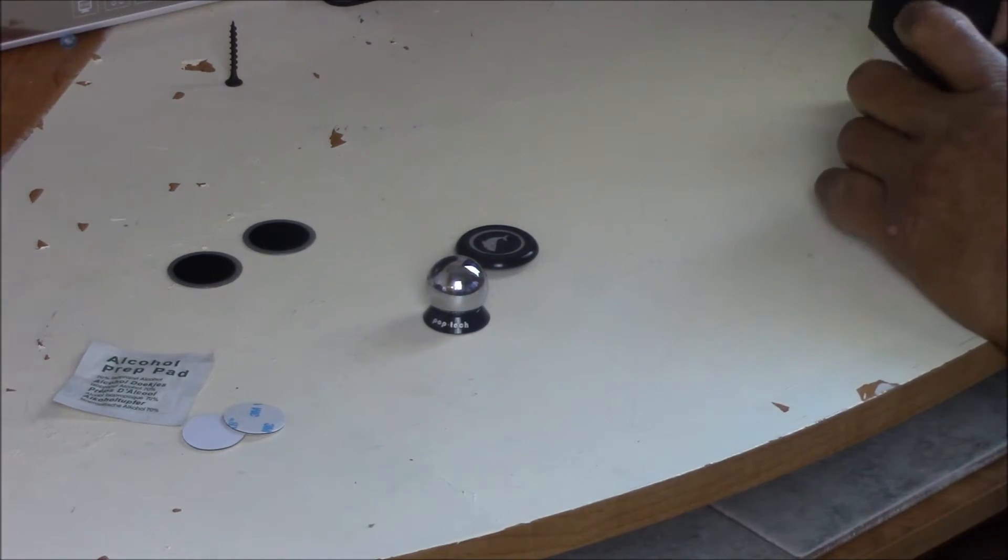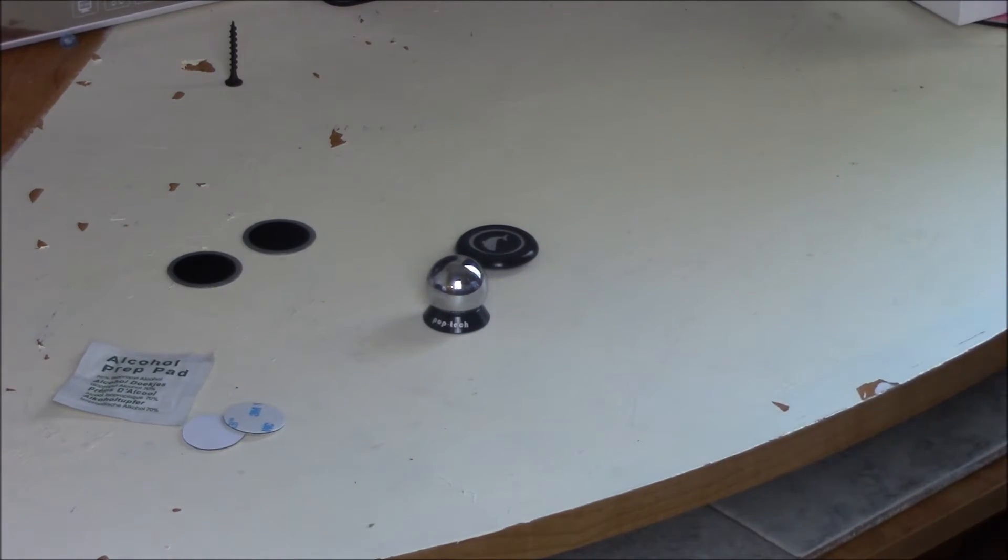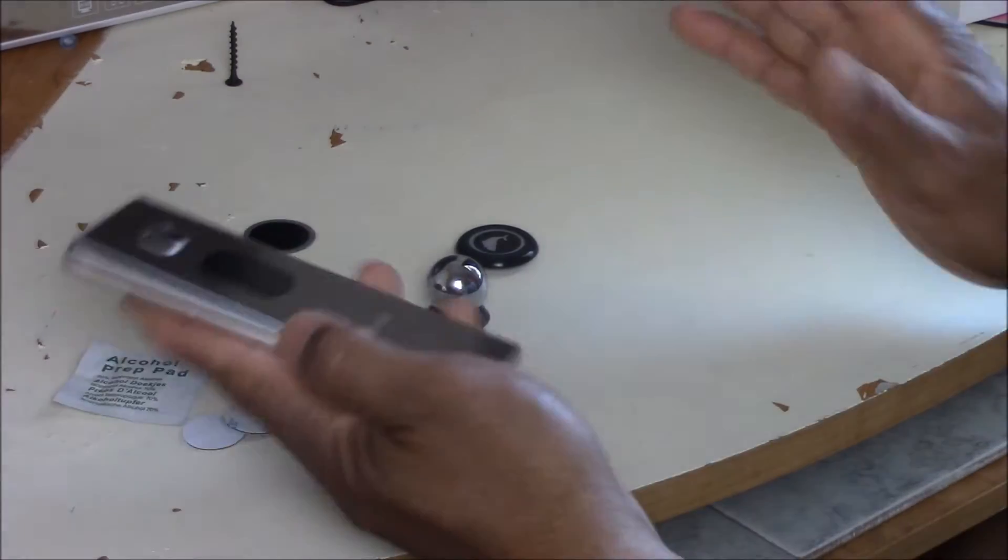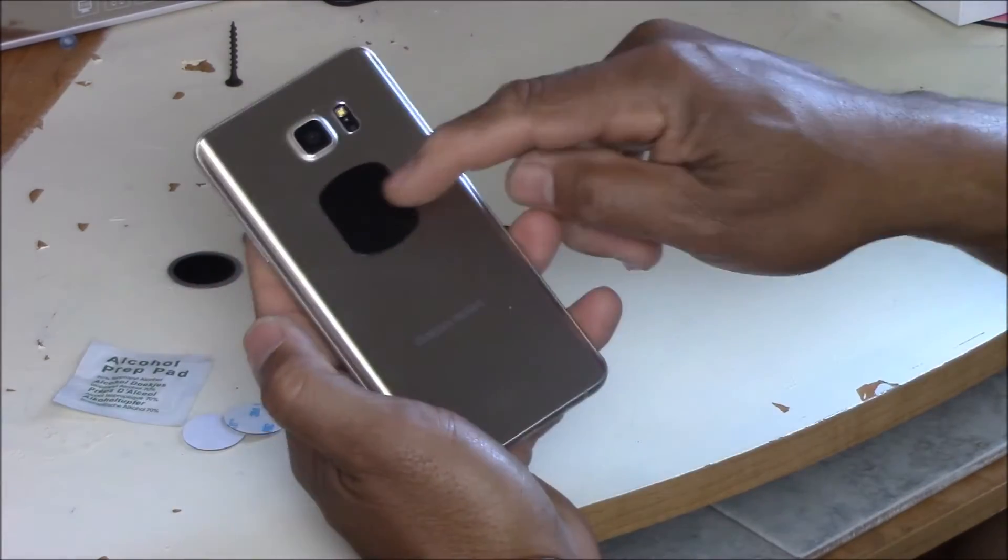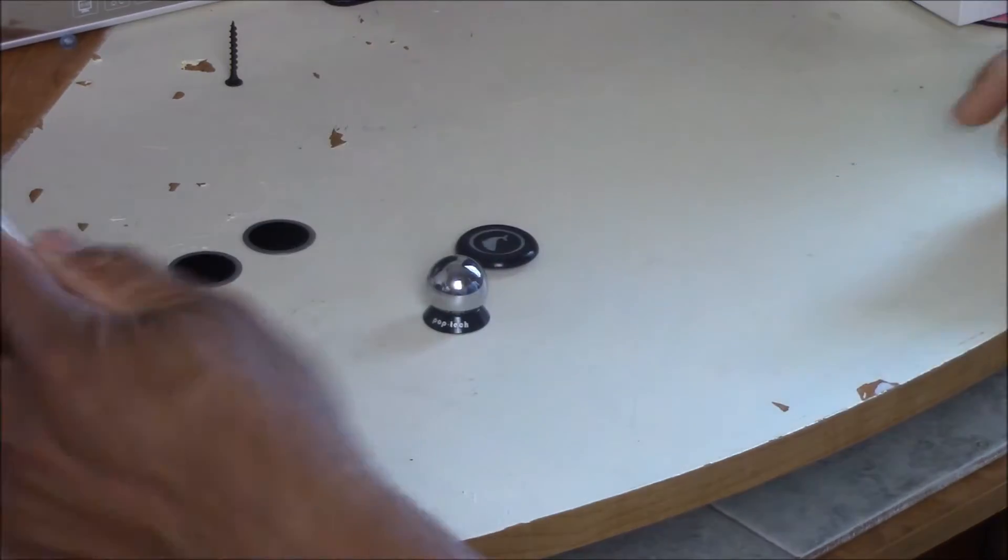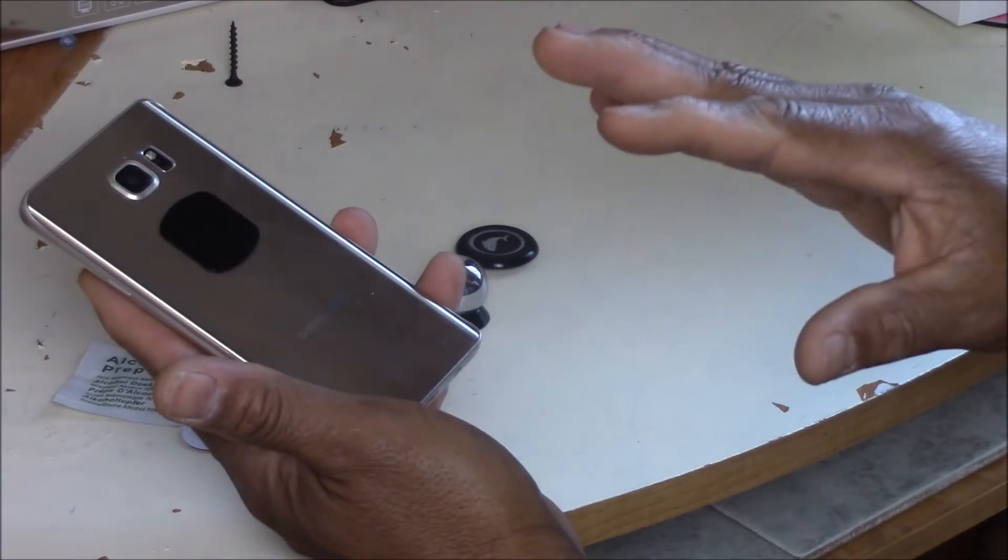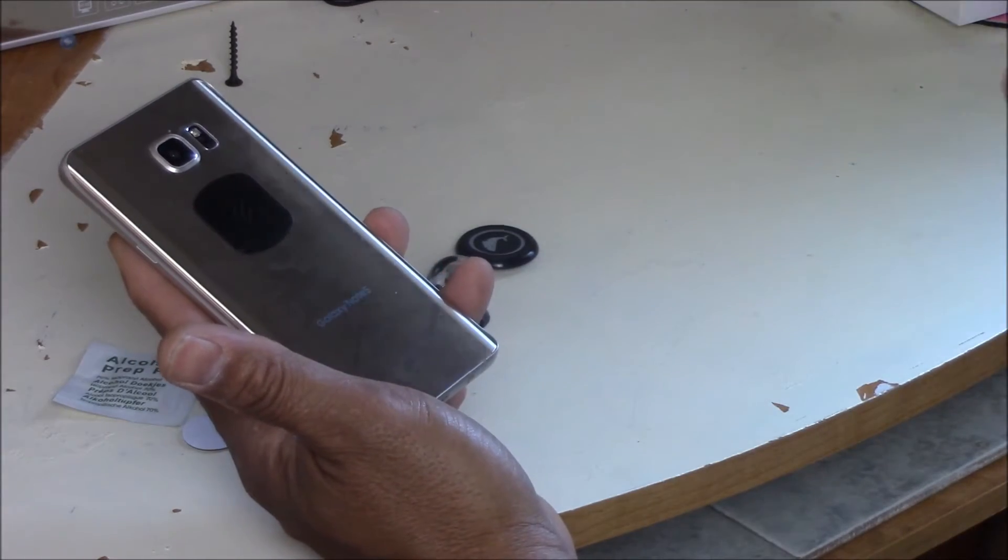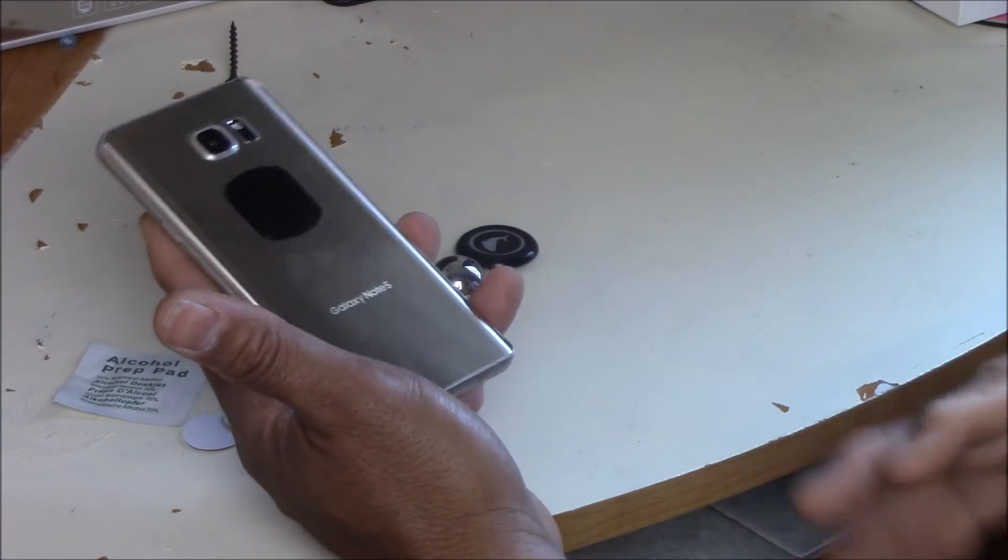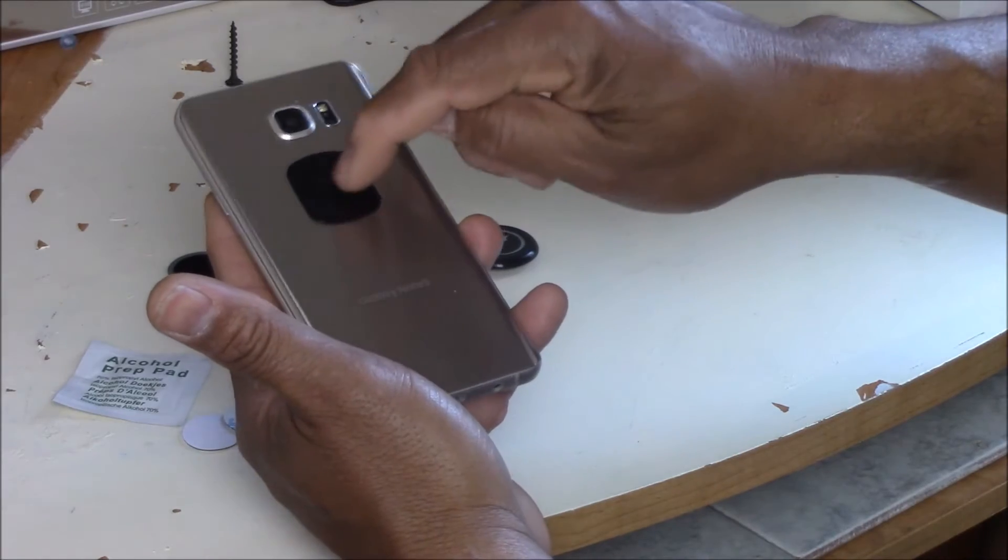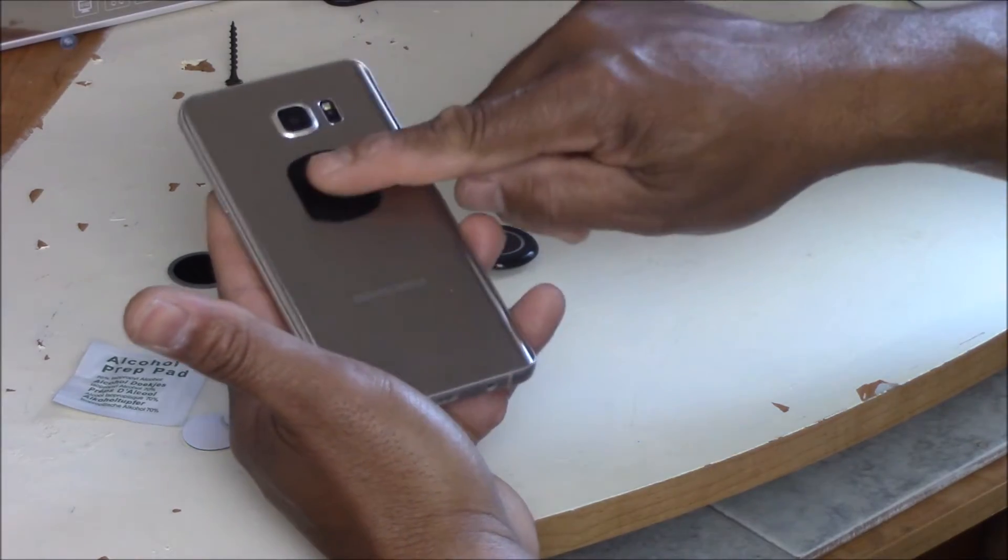This is all it comes with. I've used this kind of product before. I have one behind my Note 5 right now. One of the things I always do is because I have a drone and sometimes I use my NFC, I always try my best to make sure that it's not magnetic.